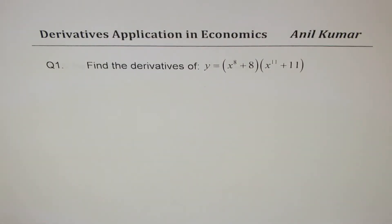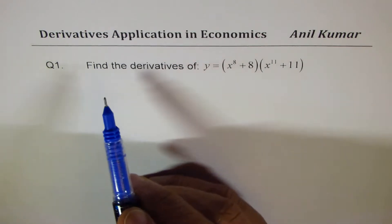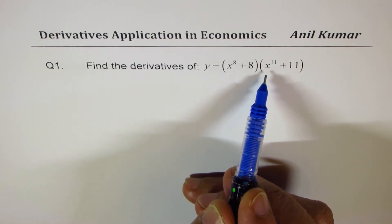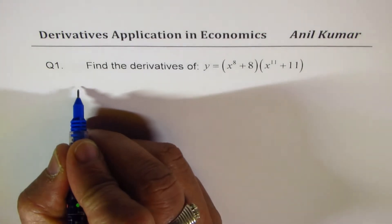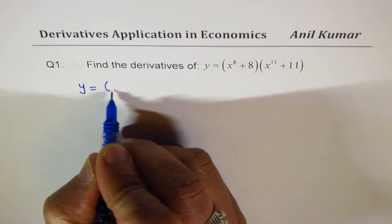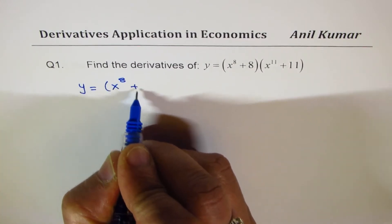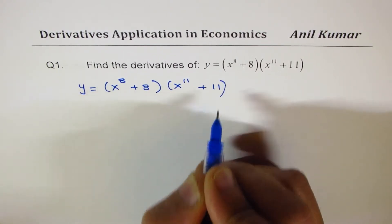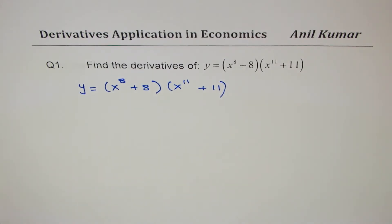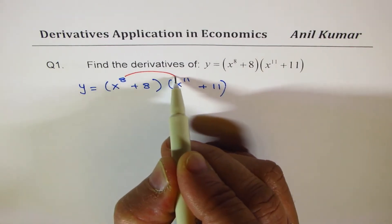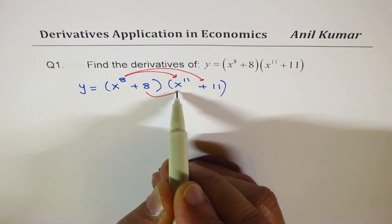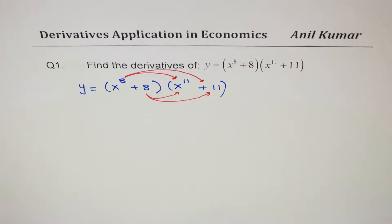Here are all the parts of question number one. Find the derivative of y equals x to the power of 8 plus 8 times x to the power of 11 plus 11. Let me rewrite the equation: y equals x^8 plus 8 times x^11 plus 11. In the first step, we'll apply the distributive property and expand it — multiplying x^8 with both terms and then with 8.